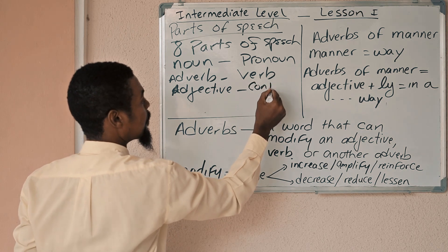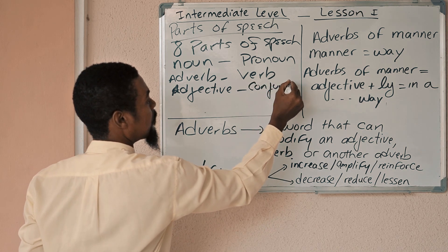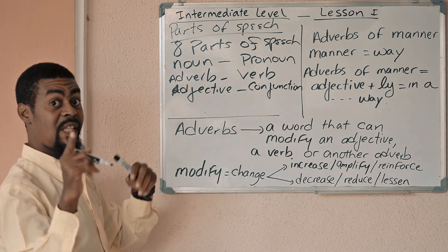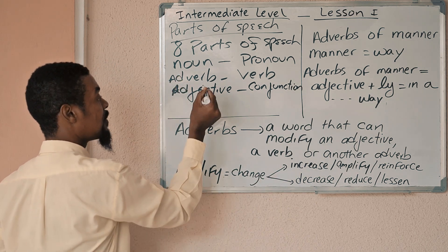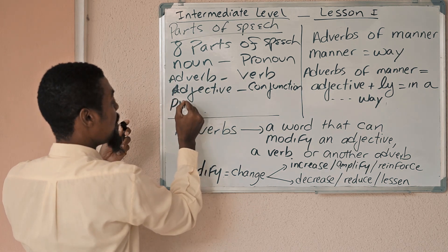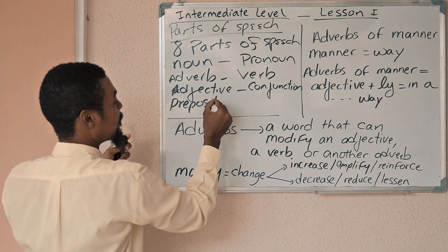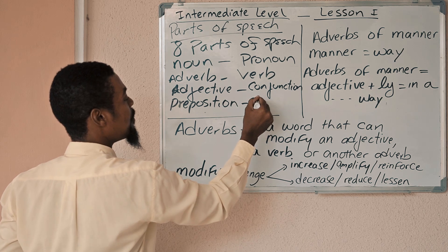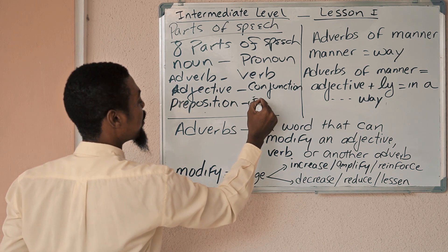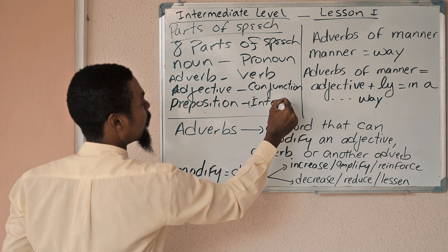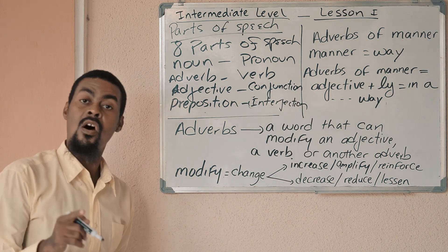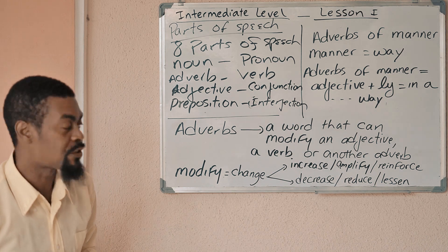A word can be a conjunction. There are eight parts of speech. A word can be a preposition. A word can be an interjection. There are eight parts of speech.